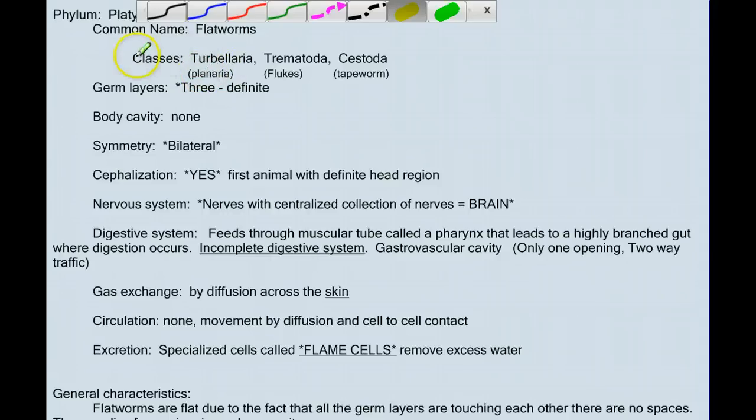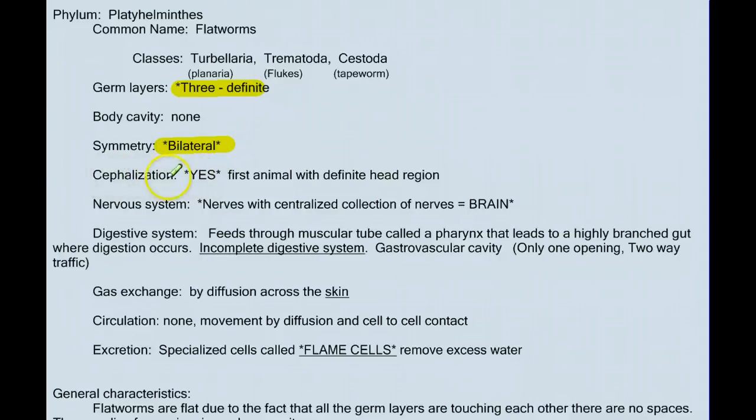So the flatworms. We have a bunch of different types, and we're not going to have to get into the different classes. But again, three germ layers, bilateral symmetry. And for the first time, we have cephalization, a definite head region. And we have a cluster of nerves in that anterior region, which we can loosely define as a brain. Well, while these are advances, we're still kind of primitive when it comes to digestive system, because the flatworms have an incomplete system. Like the cnidarians, they have a gastrovascular cavity. It only has one opening, so two-way traffic.